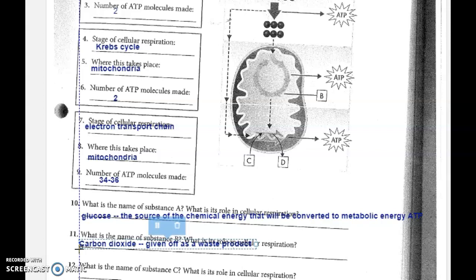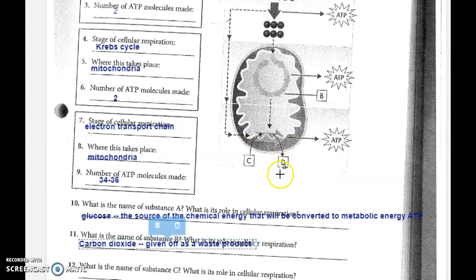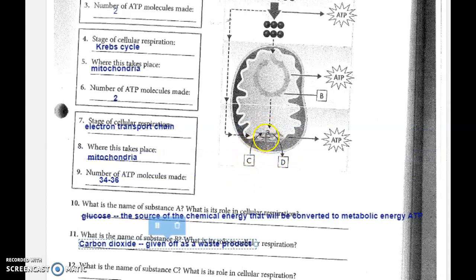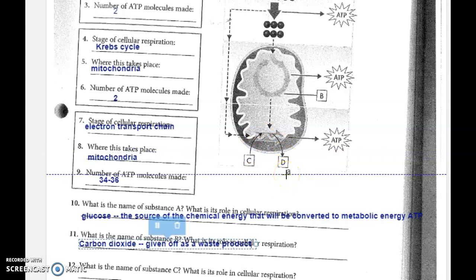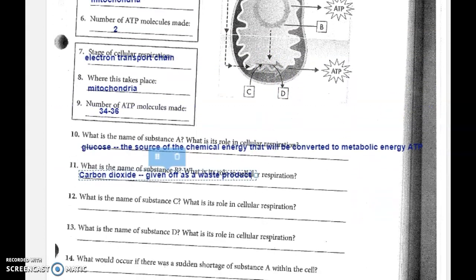Number 12 says: what is the name of substance C? Substance C is going into the electron transport chain and circling back out. This is oxygen going in — it carries those high energy electrons. Oxygen goes in, picks up some hydrogen atoms in there forming H2O, water. That's what comes back out as another waste product of cellular respiration. So we have oxygen going in, and then H2O — water — coming out as a waste product. Substance C is the oxygen.